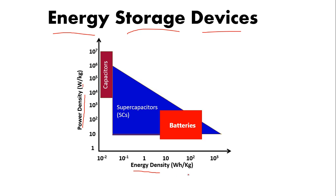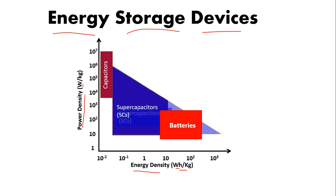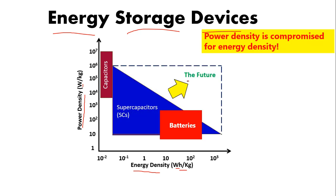I will make it very clear. Energy density is watt-hour per kilogram. You can see that battery falls on the energy side — when you keep a battery in a car, it lasts for a very long time. But on the other hand, a capacitor is basically on the power side.